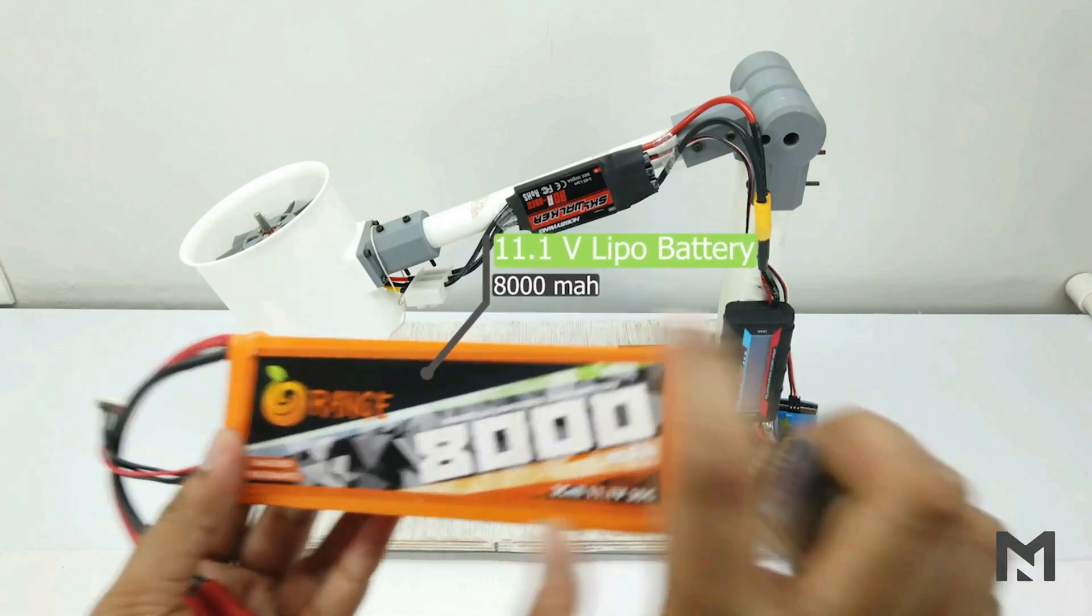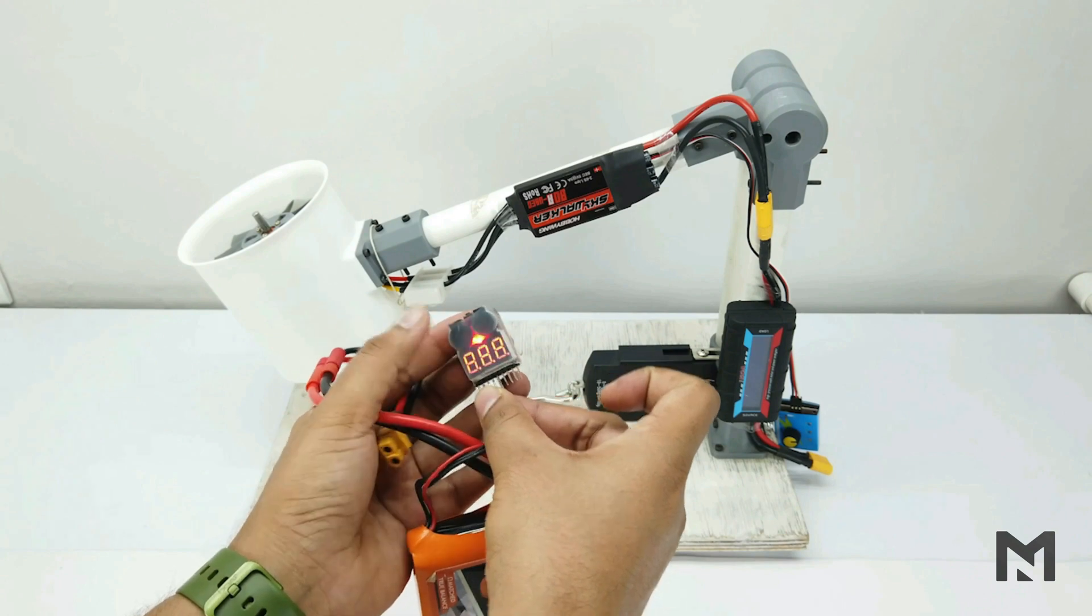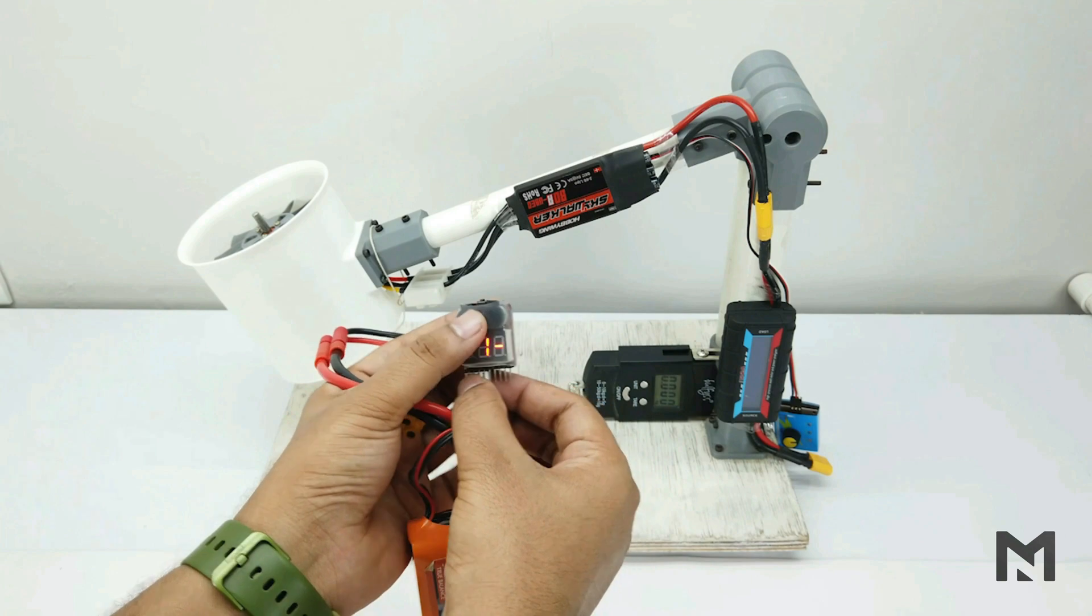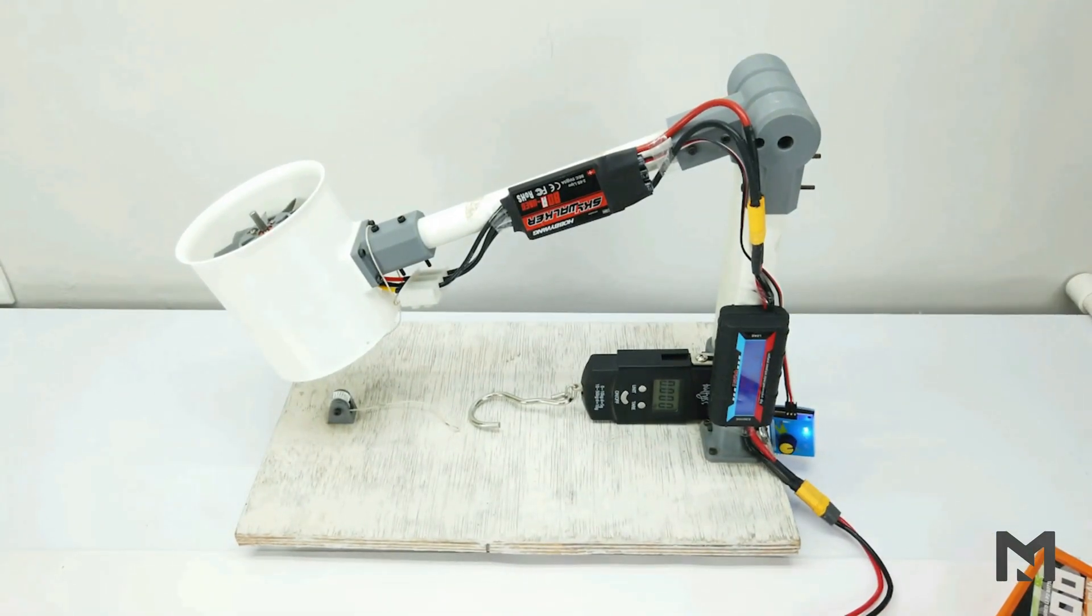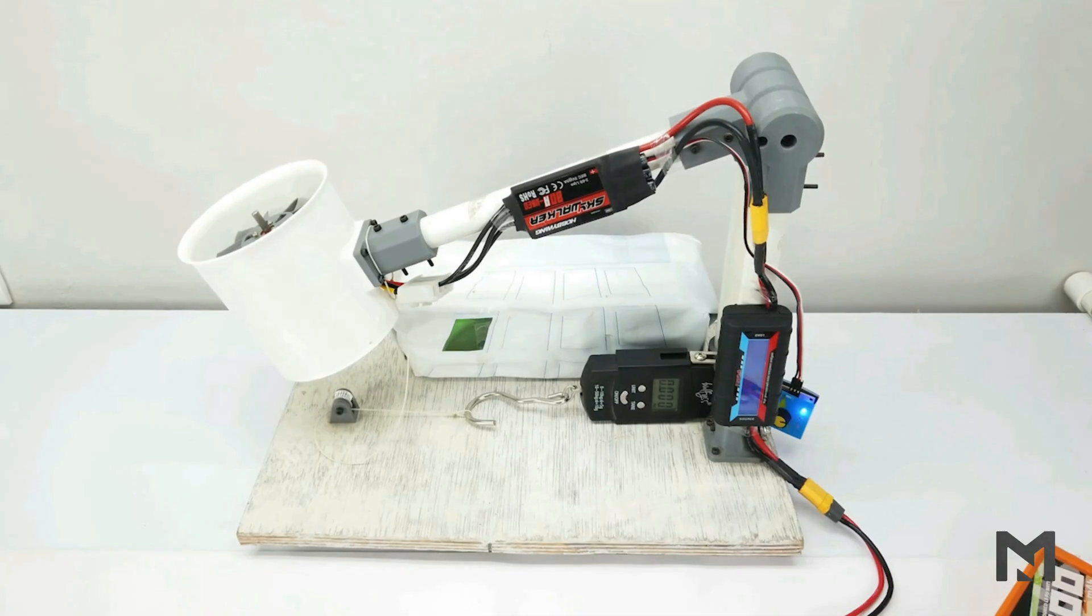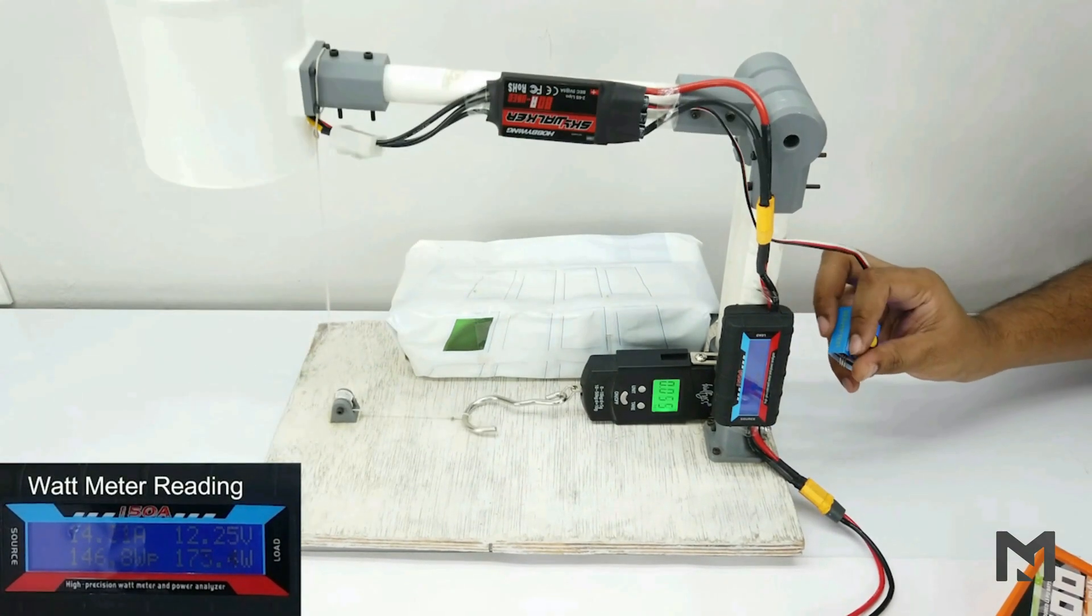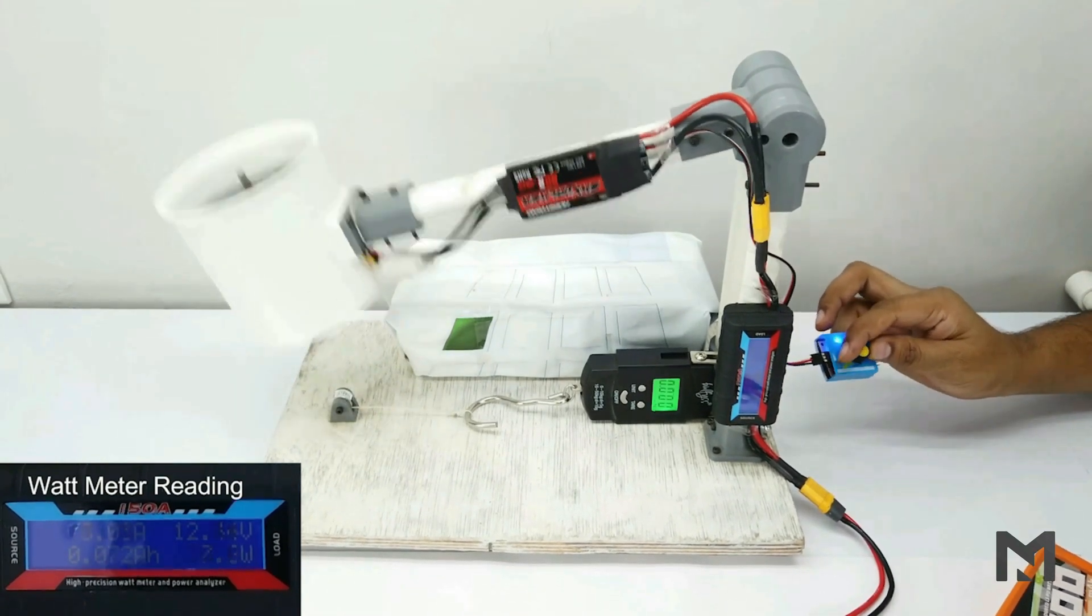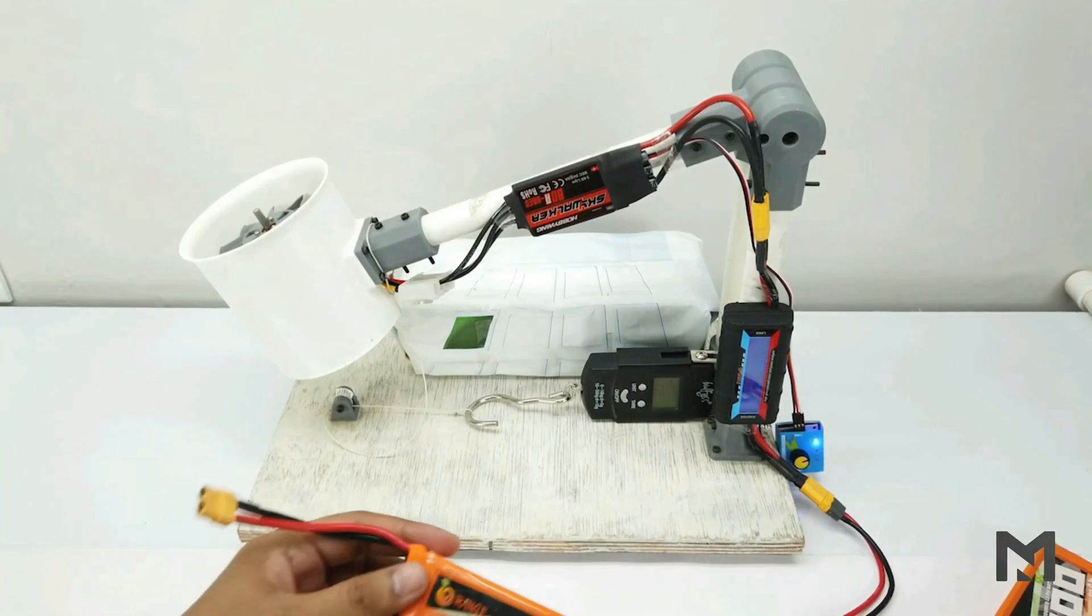So first I will use this 8000mAh 3S battery. And let's check its voltage. And it's about 12.5V. So let's add some weight so the thrust rig won't move. Now let's start the thrust test. Its thrust is low. So now I will use this 4S battery.